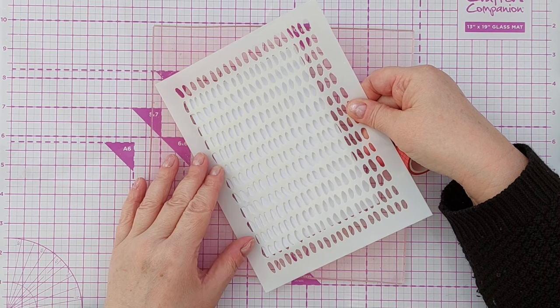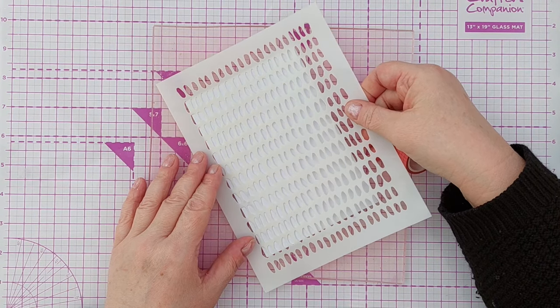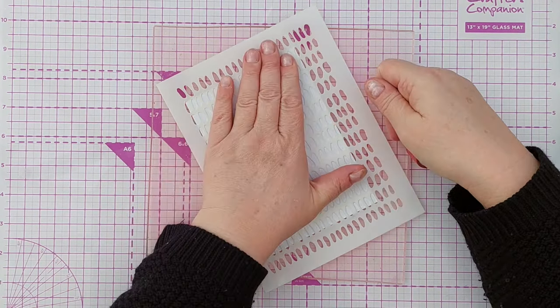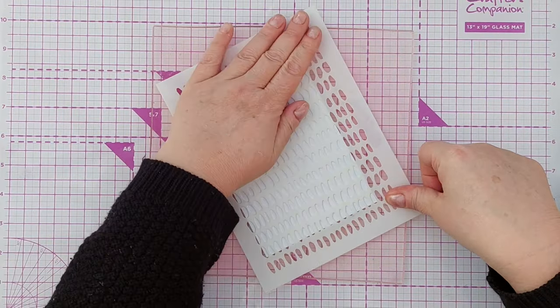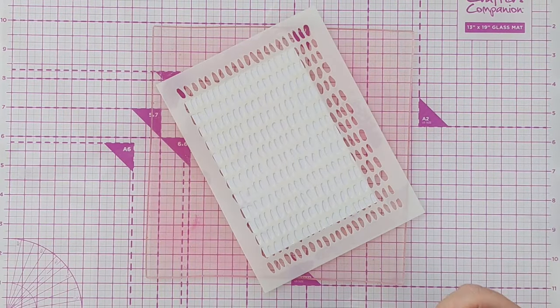To start off I've got a card blank here. I'm not creating any panels, I'm just working straight on the card blank. It's 4 by 6 inches smooth white cardstock.